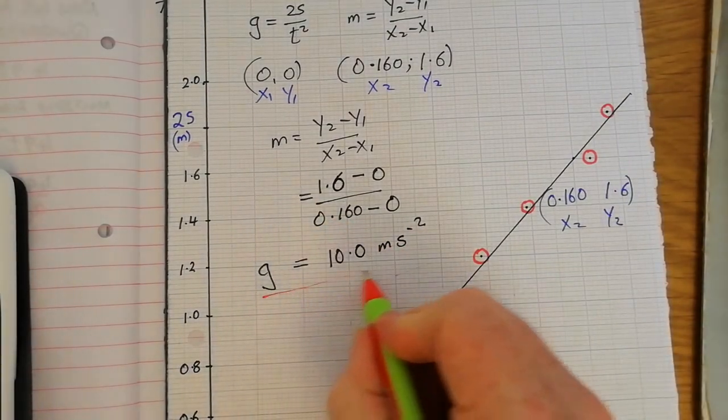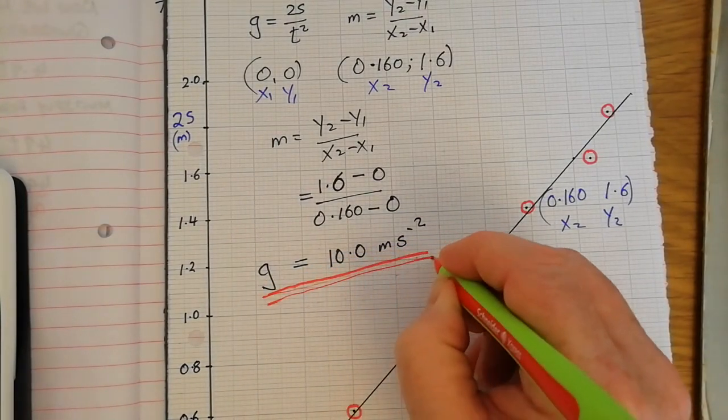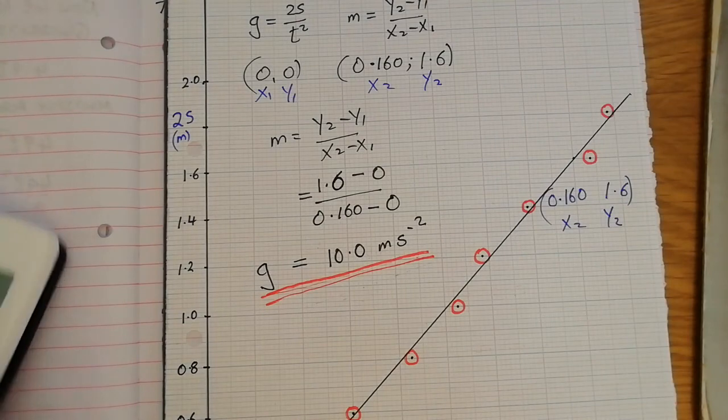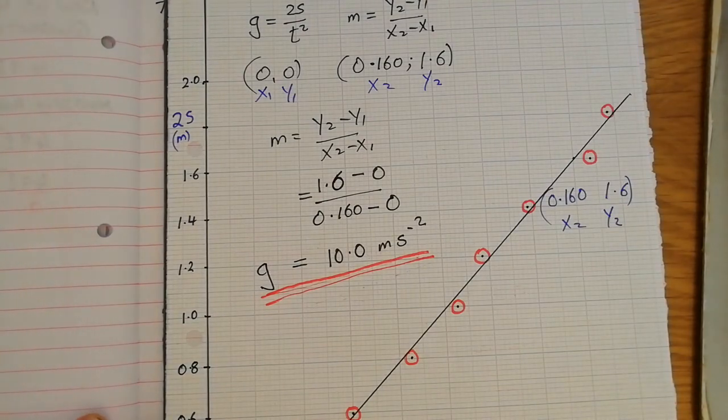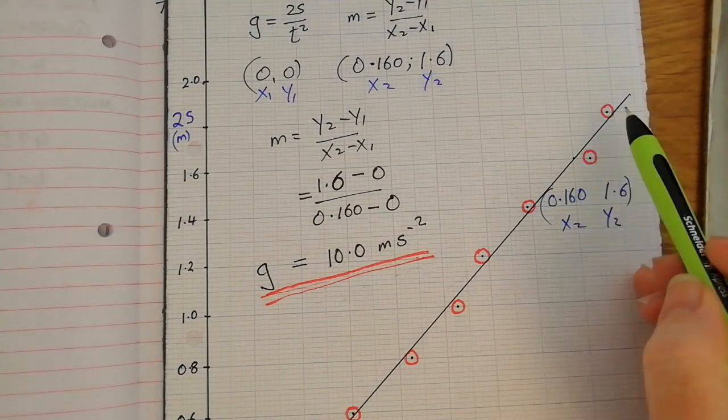10.0 now I'm a little disappointed with that only a little disappointed I would have hoped it would mean a little little bit better than my calculated value of 9.88 because generally when you get the slope of a graph it works out as a more accurate answer because you're talking about more points